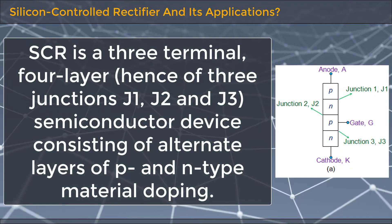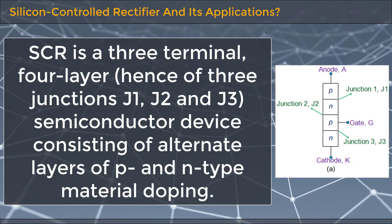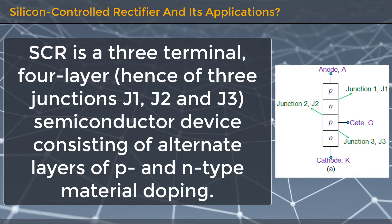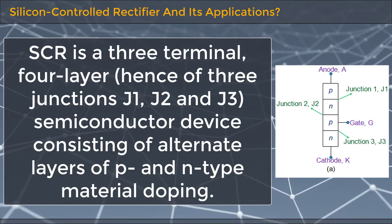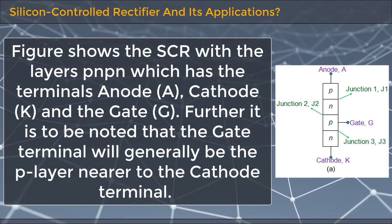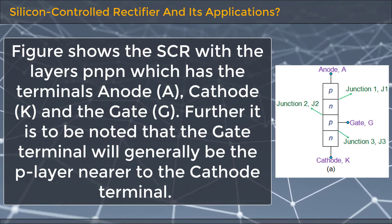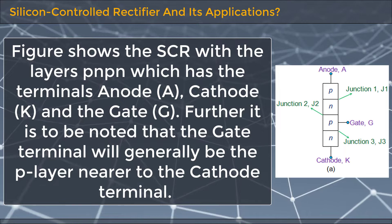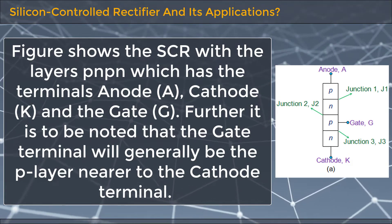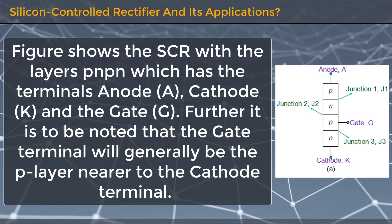SCR is a three terminal, four layer, and hence three junction device — J1, J2, and J3 — consisting of alternate layers of P and N type material doping. The figure shows the SCR with the layers P and N which has the terminals: anode, cathode, and gate. It is to be noted that the gate terminal will generally be the P layer nearer to the cathode terminal.